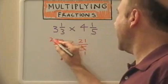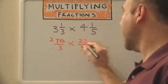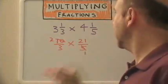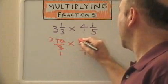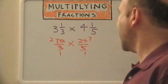Now, we multiply... Well, we can also cross-cancel the three and the twenty-one. Three goes into itself once. Three goes into twenty-one seven times.